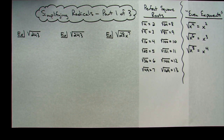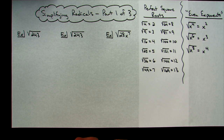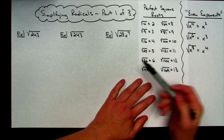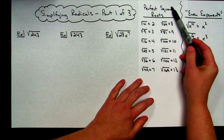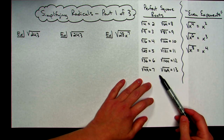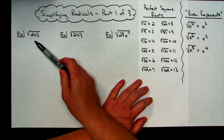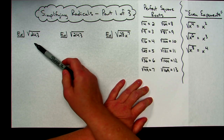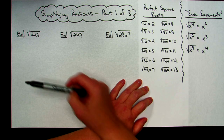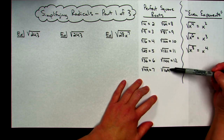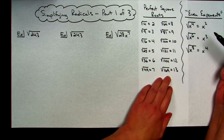Today we're going to take a look at simplifying radicals. This will be the first video of three, just to keep the videos a little bit shorter. Before I simplify radicals, I like to have a list of my perfect square roots to help me simplify as efficiently as possible. I went all the way up to the square root of 169, which is usually going to be good enough.